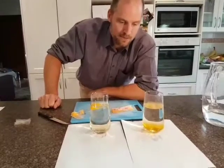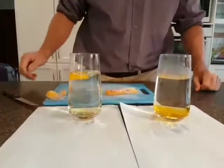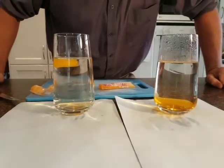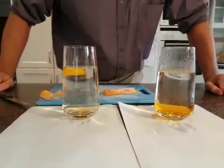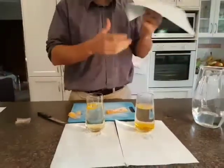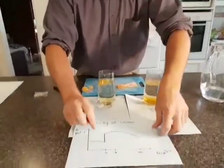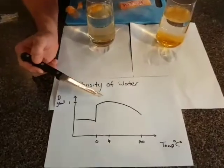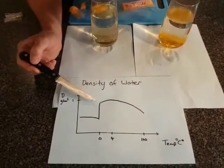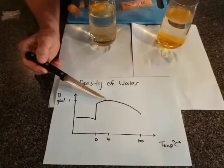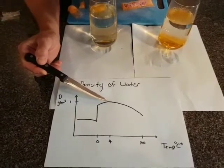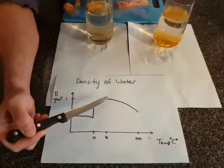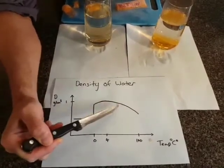Hot water is in fact less dense than cold water. And so if we have a look at this graph here showing the density of water, we can see that in fact water is most dense not as ice, but at four degrees Celsius. As we increase the temperature, the density decreases.